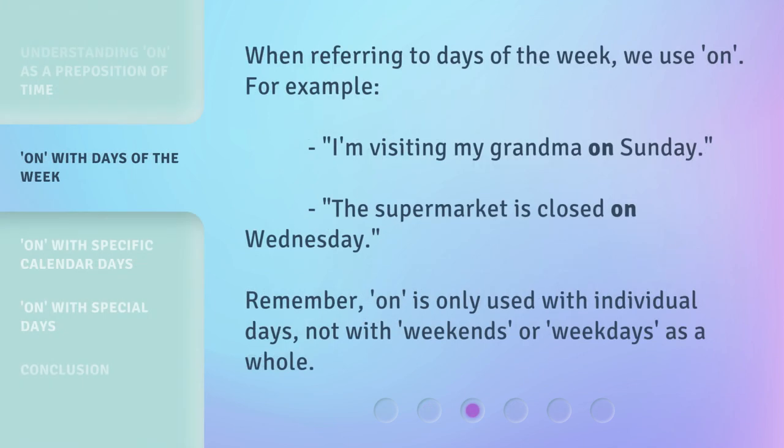When referring to days of the week, we use ON. For example, 'I'm visiting my grandma on Sunday.' 'The supermarket is closed on Wednesday.' Remember, ON is only used with individual days, not with weekends or weekdays as a whole.